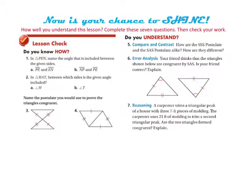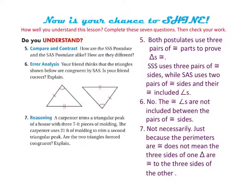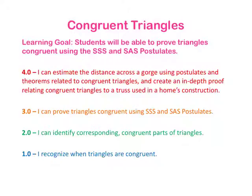Now is your chance to see how well you understand the lesson. Pause the video and do the lesson check — don't forget to check your answers on the next slide. Here are the answers for numbers one through four. Now check your answers for questions five through seven. If you do not understand one of these, please ask me tomorrow in class. If you've mastered the lesson check, go ahead and take a shot at the challenge. Now take another minute to read the learning goal and the scale — have you climbed up the scale after going over the lesson?